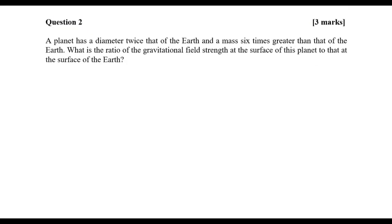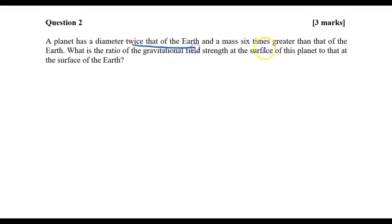Let me move on to the second question. I will move things quickly. You have a planet with diameter twice that of the Earth and mass six times greater. What is the ratio of the gravitational field strength at the surface of this planet to the surface of the Earth? We're going to do this question. Let me write down the formula first: gravitational field strength is given by gₚ = GMₚ/Rₚ².